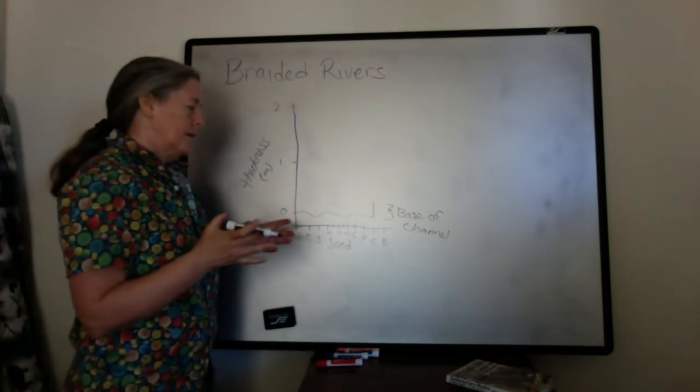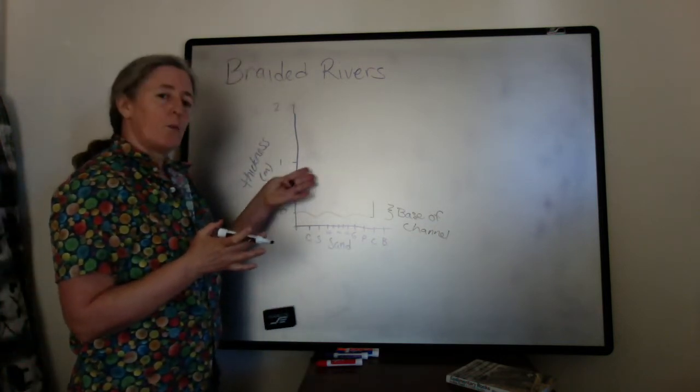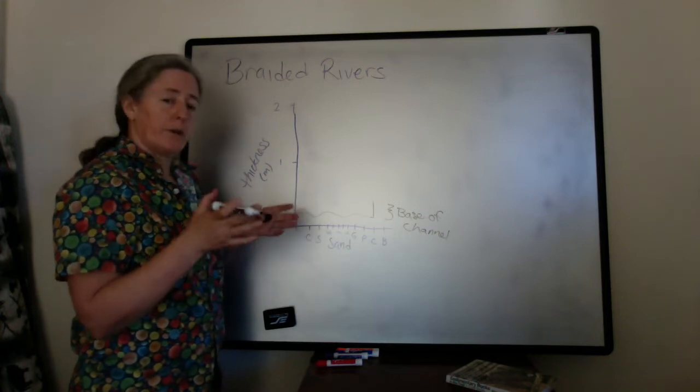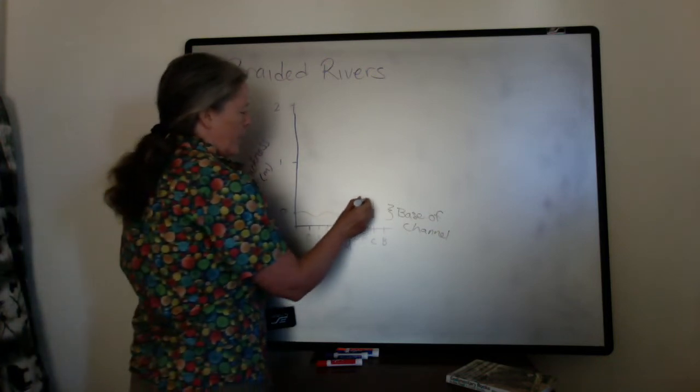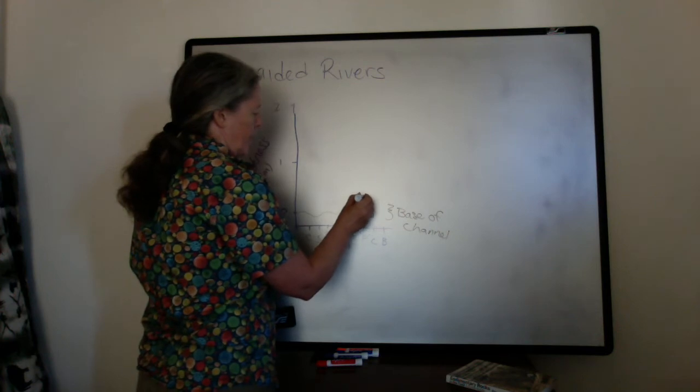As the beds accumulate the water gets shallower. The bar migrates to the side. And so they often fine upward.